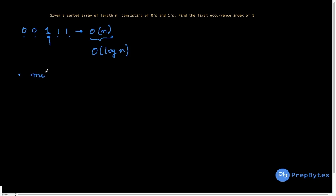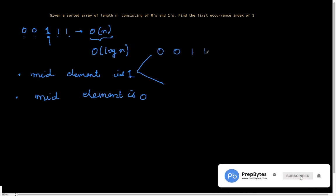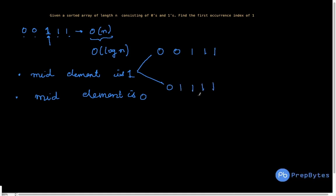We check the mid element. There are two situations: mid element is one, or mid element is zero. The mid will keep changing as we apply binary search — I'm taking a generalized case. Let's say we have 0 0 1 1 1 1, and another option is 0 1 1 1 1. In the second case the mid is actually the index I'm supposed to return.